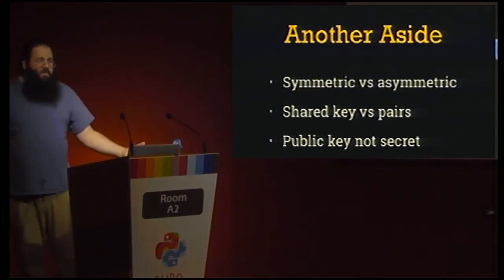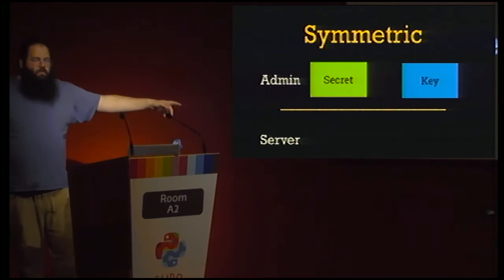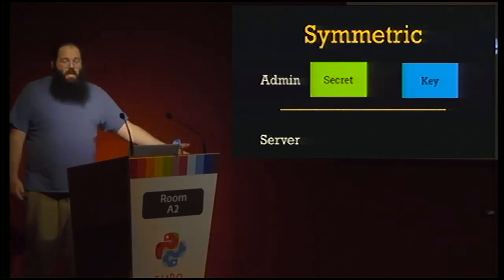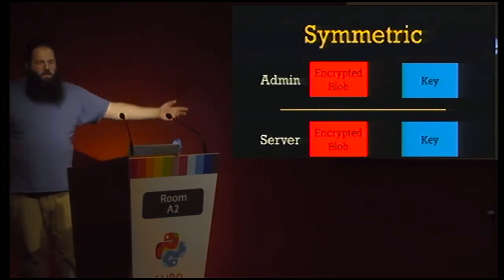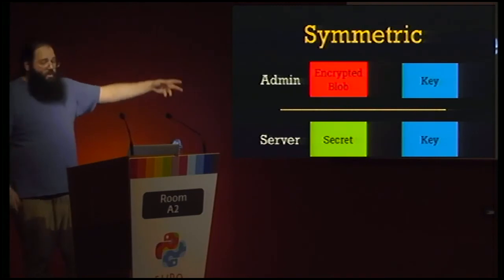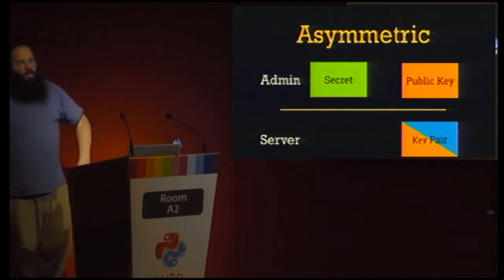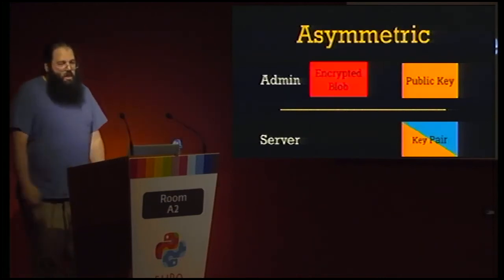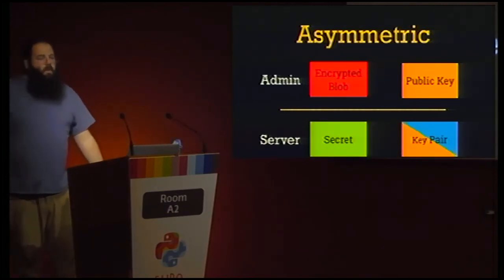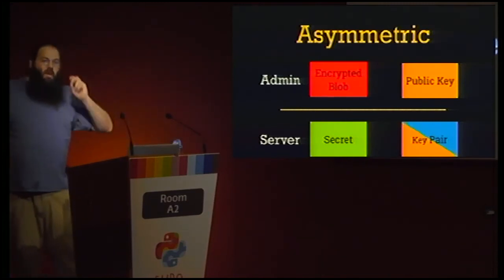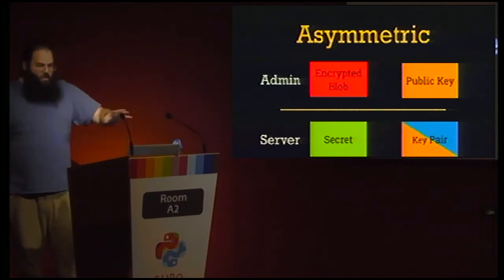Quick primer on encryption types. Symmetric encryption: generate a random key, use it to make an encrypted blob, copy both key and blob to the target server, and use the key to decrypt. Asymmetric cryptography: generate a public-private key pair on the server, copy the public key to your workstation, generate an encrypted blob using that public key, copy it to the machine, and use the private key to decrypt. Symmetric key systems require distributing a single shared key to every target machine, whereas asymmetric keys generate a separate key pair for each.